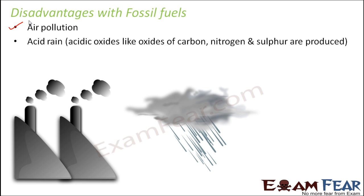These acidic oxides have a lot of adverse effects not only on living organisms but on many other things like monuments. One classic example of the adverse effect of acid rain is the Taj Mahal — its shine has reduced a lot over the past couple of years due to acid rain.